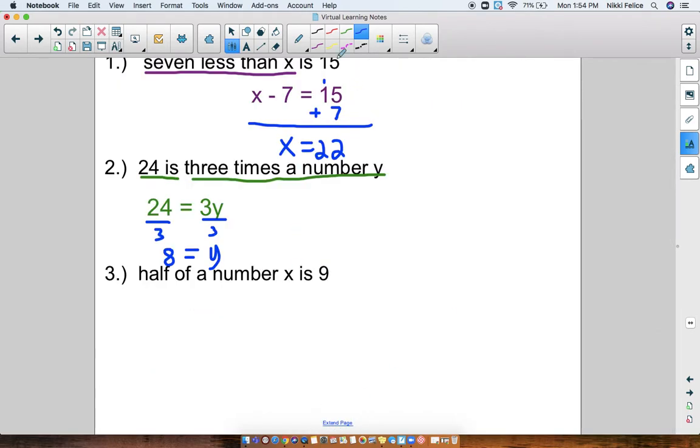All right, let's take a look at this last one. We have half of a number x. Half of a number x. There's two ways you can write that. We can write that as 1 half x. Or we can write that as x divided by 2. And we know we can do this because when you cut something in half, you're dividing it by 2. So x divided by 2 is the same thing as 1 half times x. And then we have is 9. So that means 1 half x equals 9. Or x divided by 2 equals 9. Either way is okay.